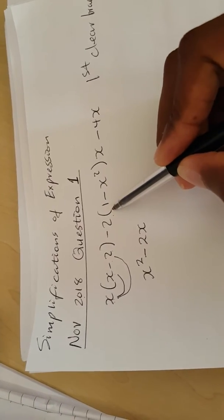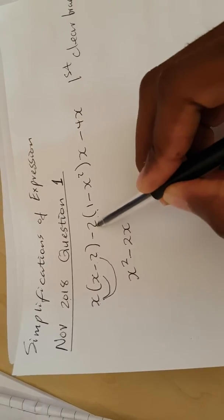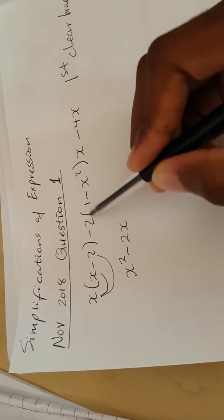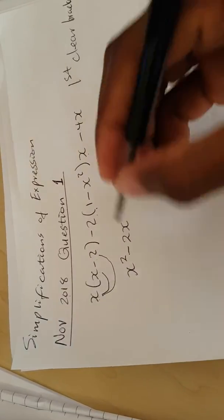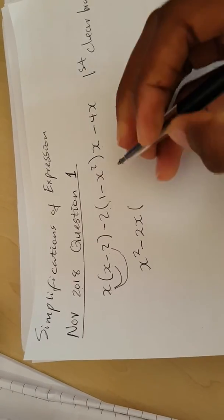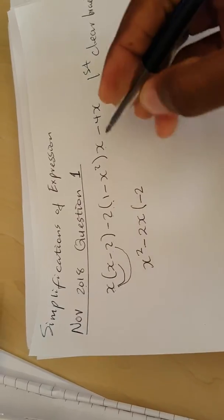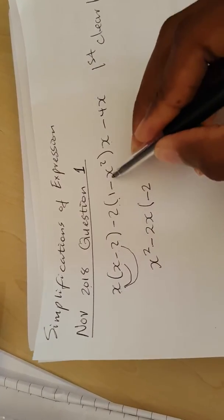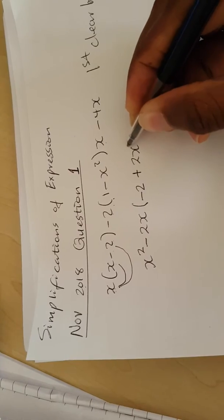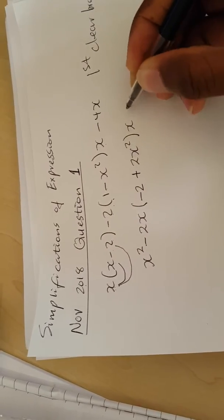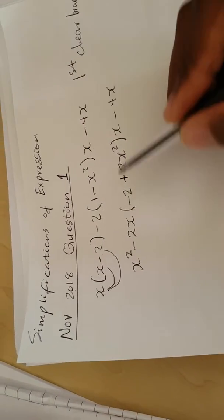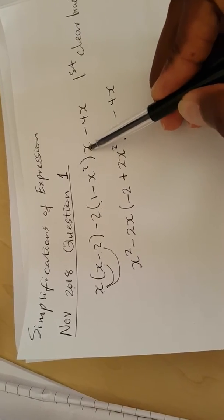When it comes to this bracket, outside we have two variables: negative 2 and also x. So all of these variables should multiply what is inside the bracket, but separately. Minus 2 times 1 gives negative 2, and minus 2 times negative x squared gives positive 2x squared. We put a bracket here because we still have to multiply with this x.